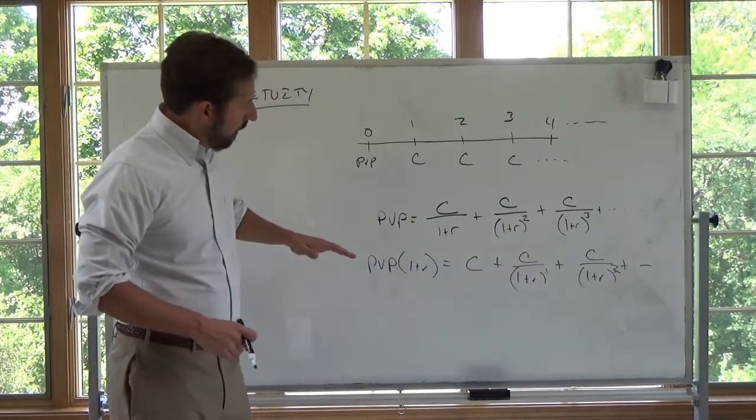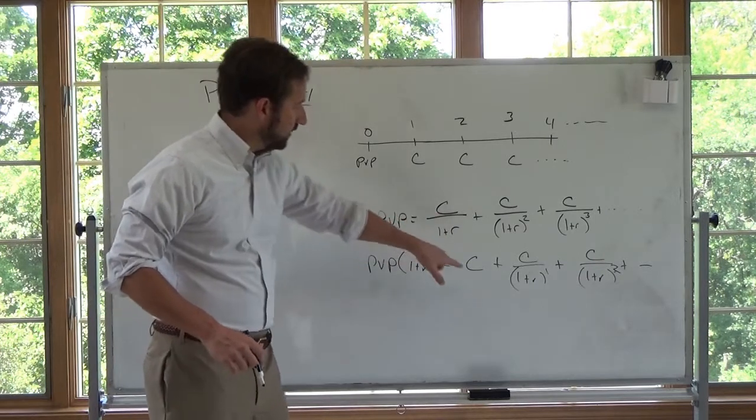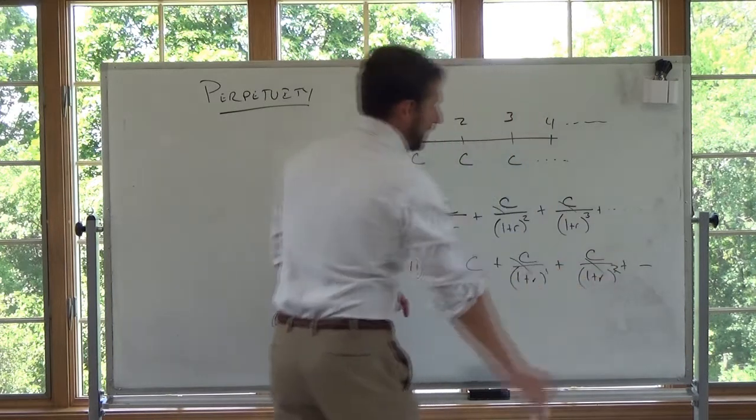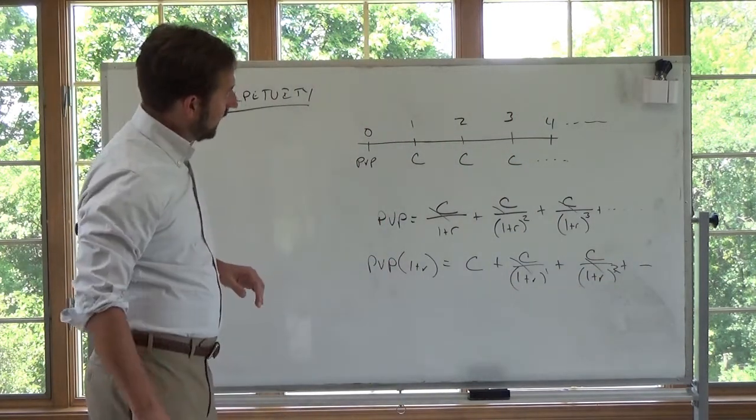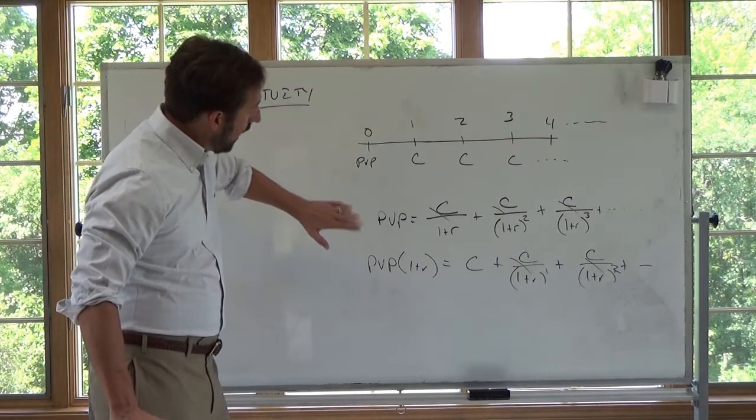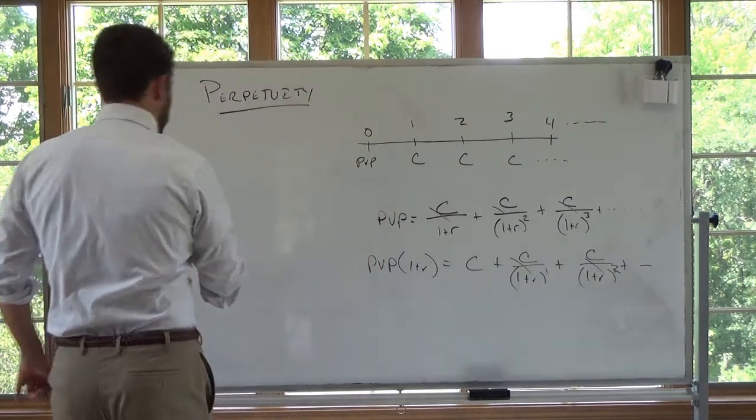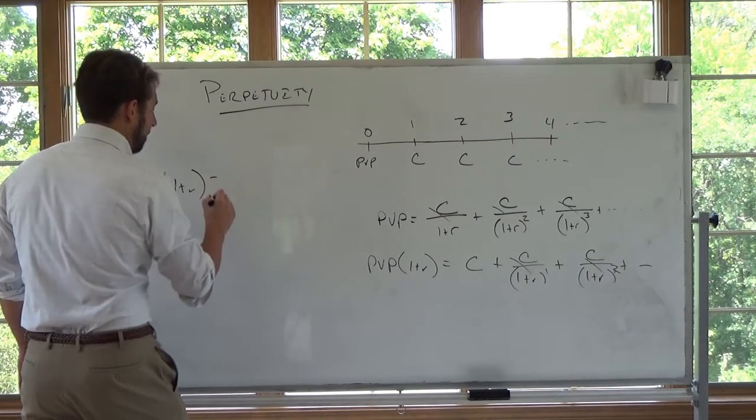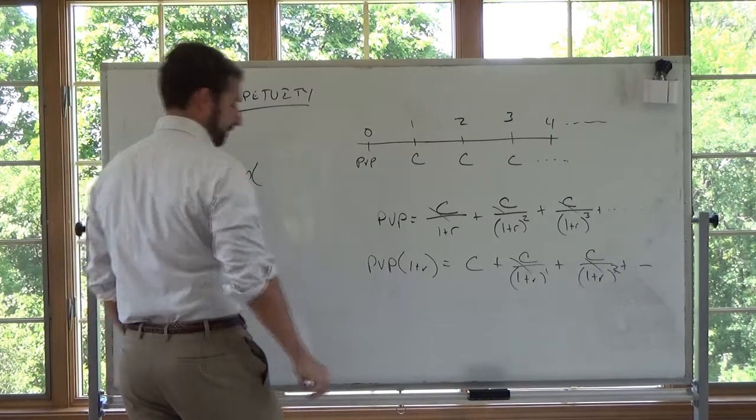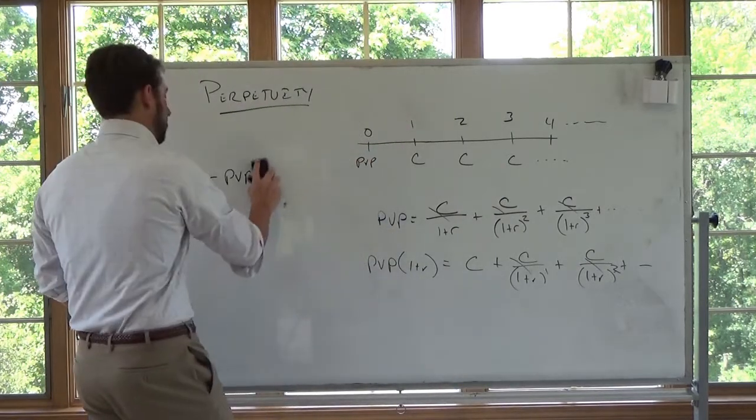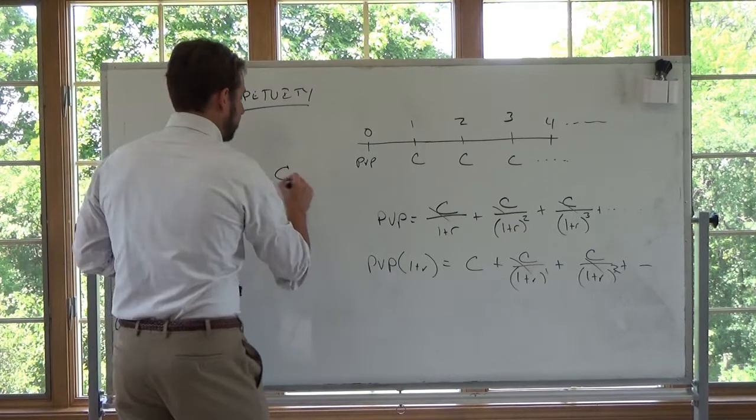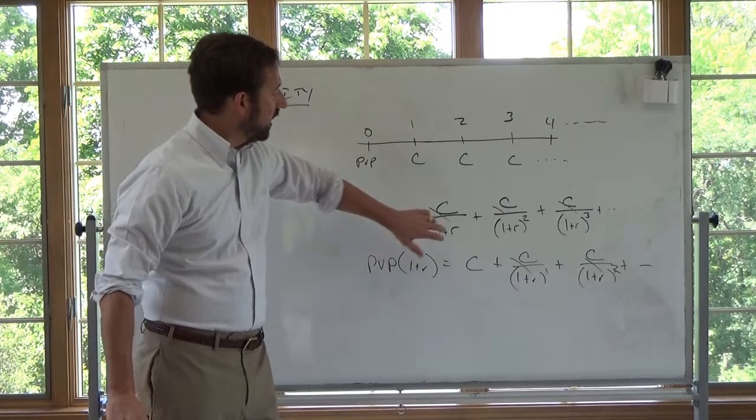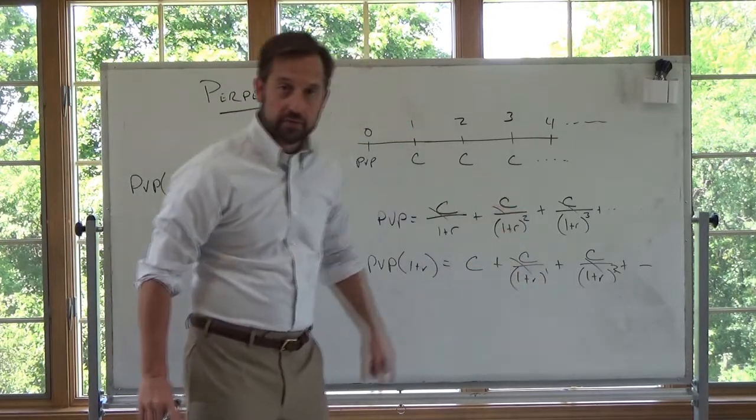So the idea here is the only difference between these two is this C. This cancels this, this is the same as that. So they cancel if I subtract. So the idea here is if I subtract, take this away from this, then I'm going to get present value of perpetuity times 1 plus R minus present value of perpetuity is equal to C. That's the only term here that is not here. Every term here is here.